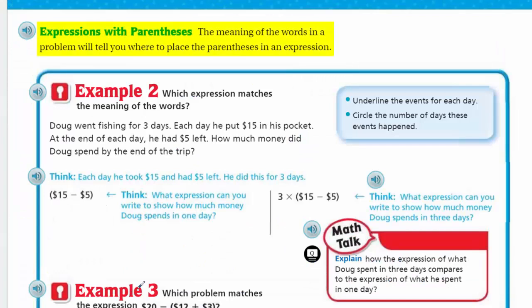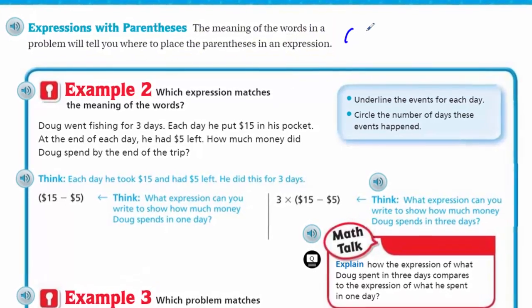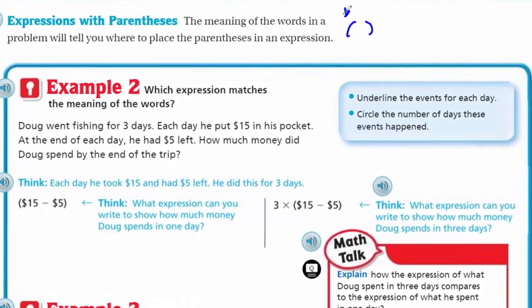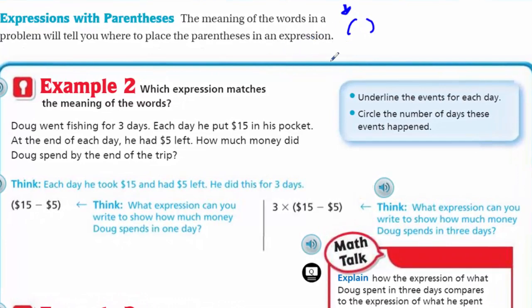Okay. Now we have expressions with parentheses. The meaning of the words in a problem will tell you where to place the parentheses in the expression. And you guys know parentheses are these wonderful things. To have one of these brackets would be a parenthesis. But we have two of them, that's plural, so we call them parentheses.